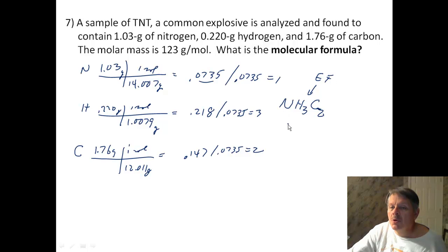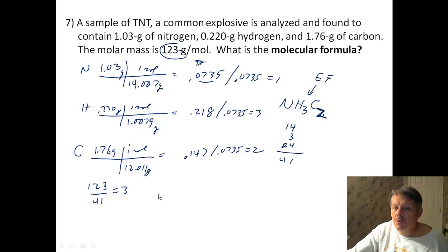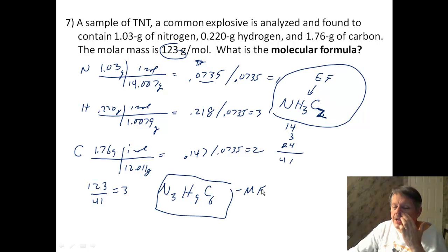Well, they're all whole numbers, so I don't have to multiply by anything. So I have NH3C2. And that is my empirical formula. How much does my empirical formula weigh? 14 plus 3 plus 24. That's 41. Well, that's not 123. But if I take 123 divided by 41, that gives me 3. So that tells me I have to take my empirical formula and multiply it by 3. So it's going to be N3H9C6. And that's my molecular formula. That tells you exactly what's in the molecule. And you should be able to add that up and get up to 123 grams.